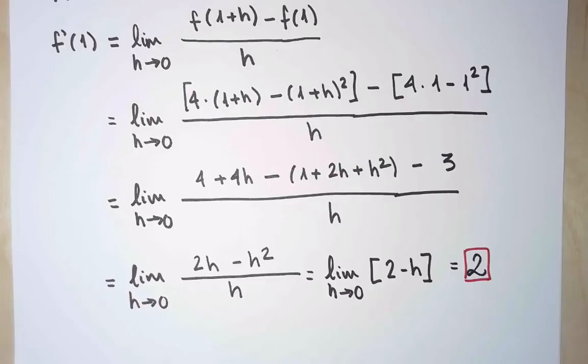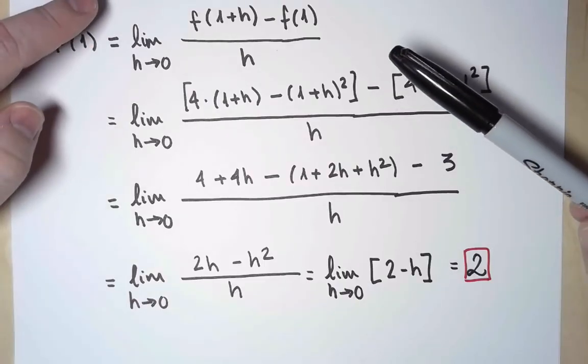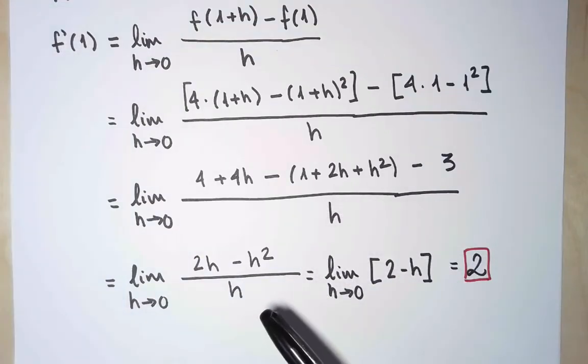This wasn't too bad. However, if the function is not as simple as a polynomial, this may get messy. And besides, it will be tedious if I have to go through this every time I compute a derivative. Is there a better way?